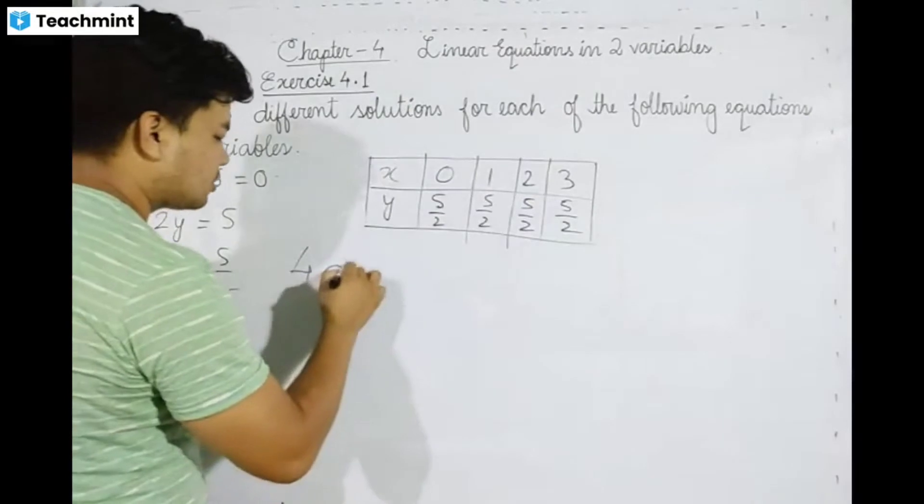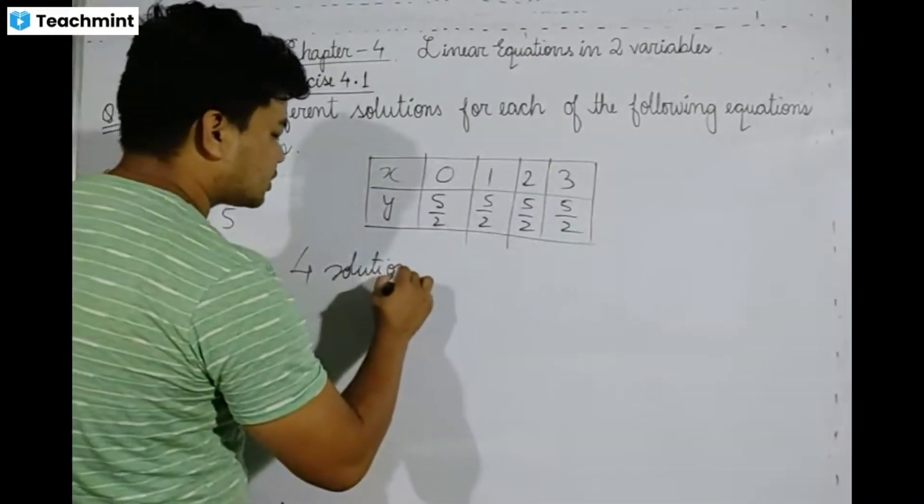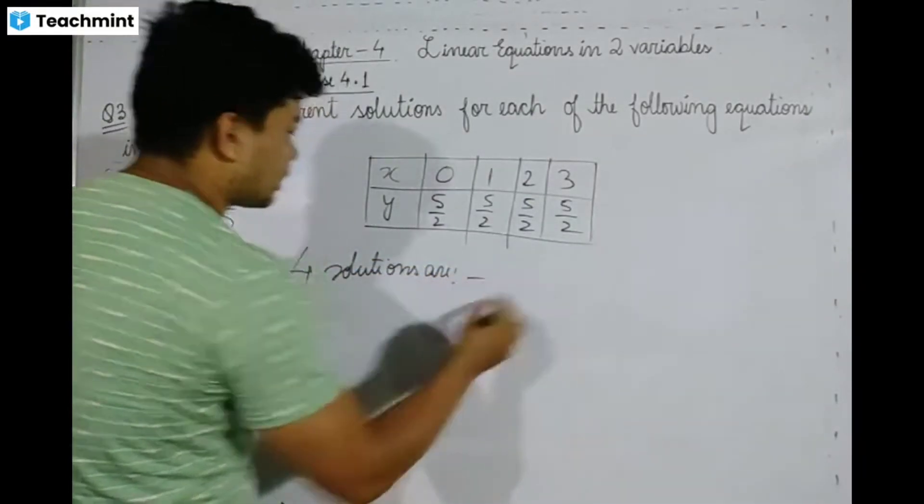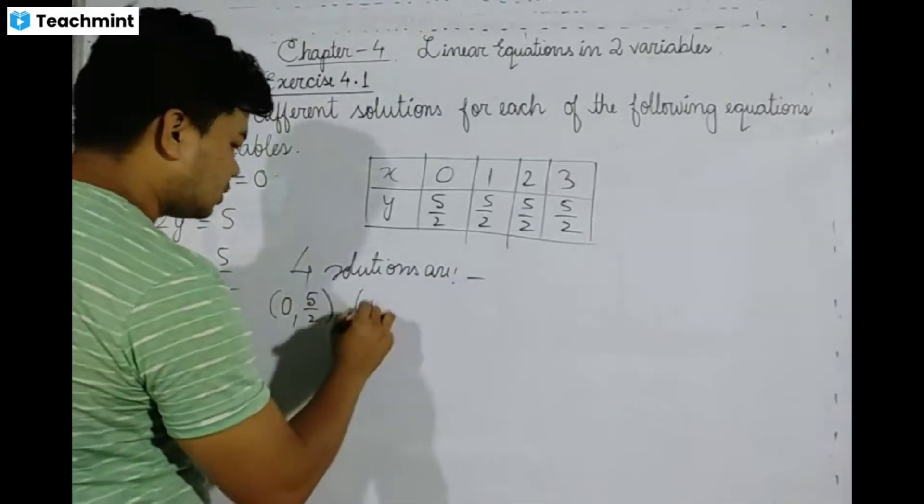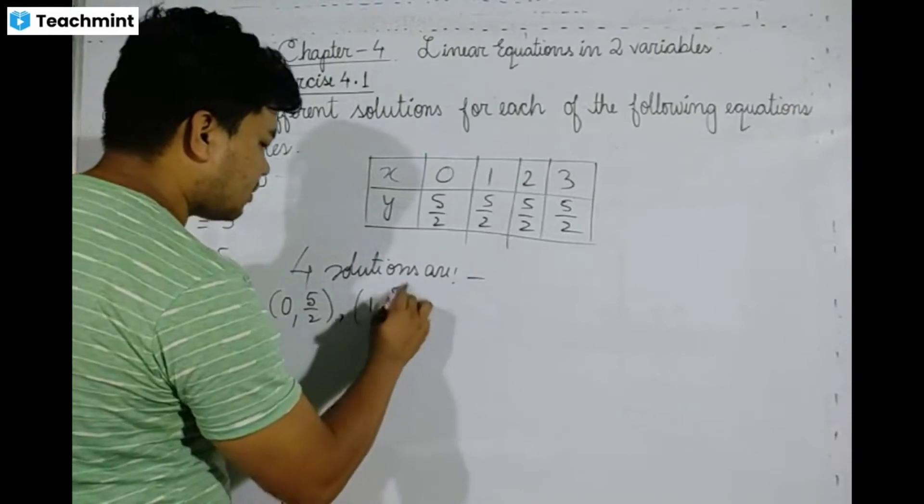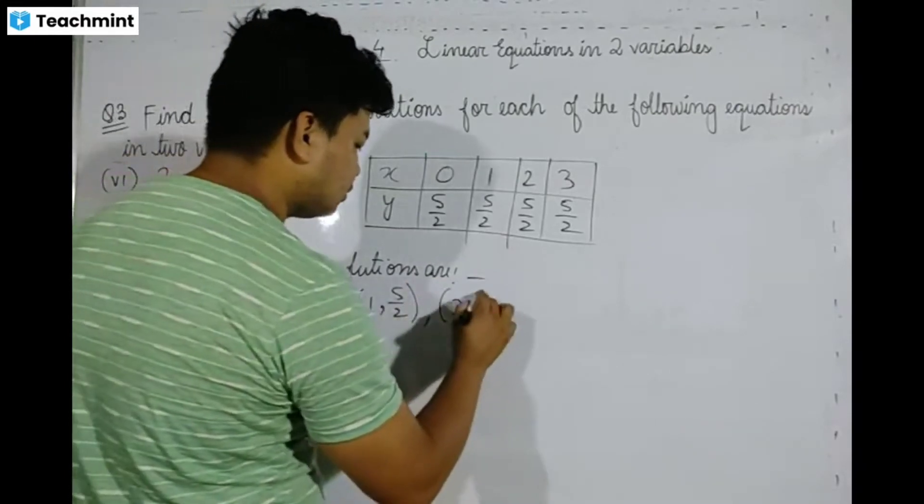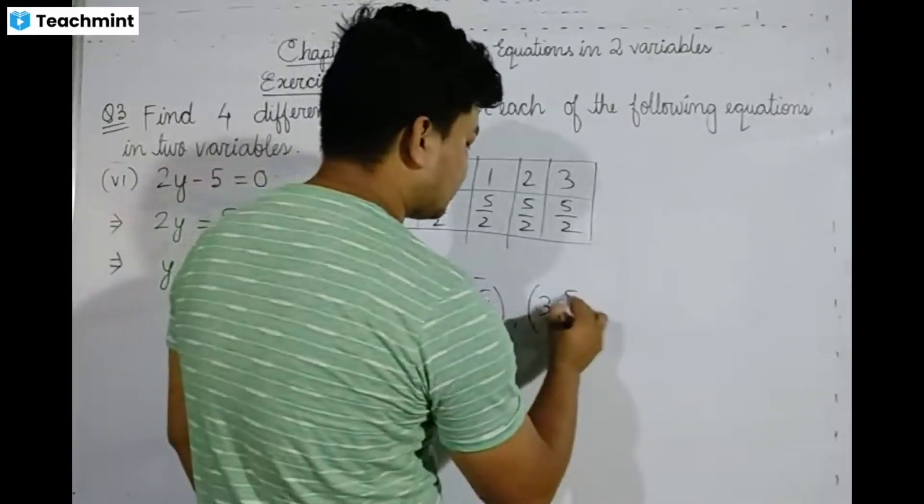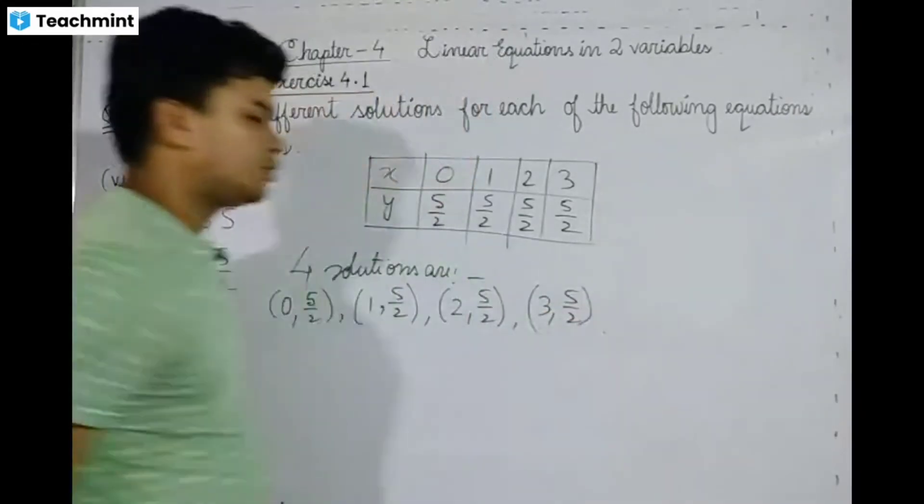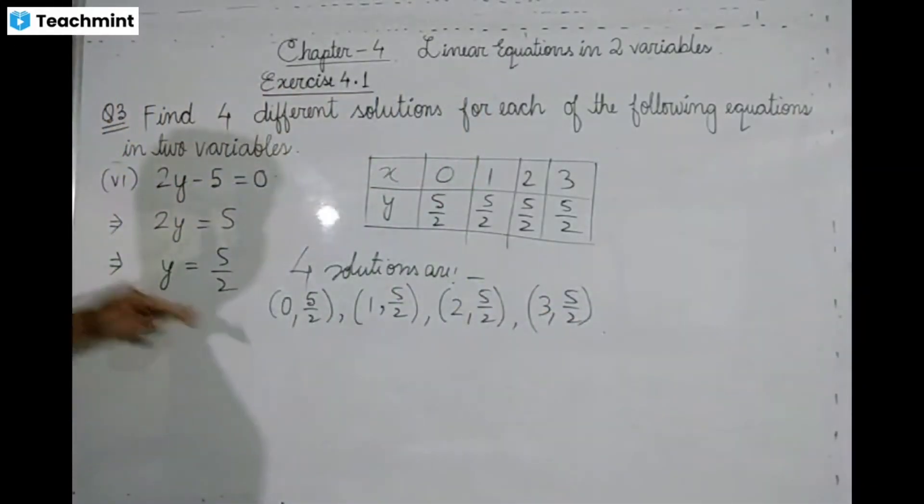The four solutions are: zero, five by two; one, five by two; two, five by two; and three, five by two. These are the ordered pairs.